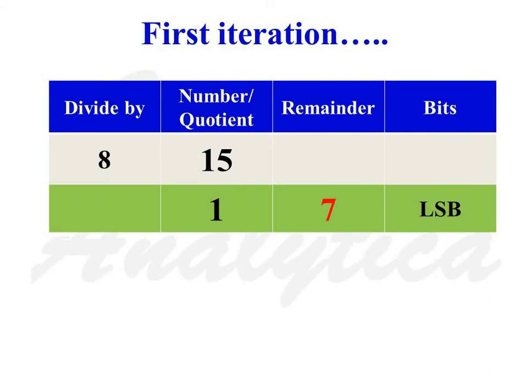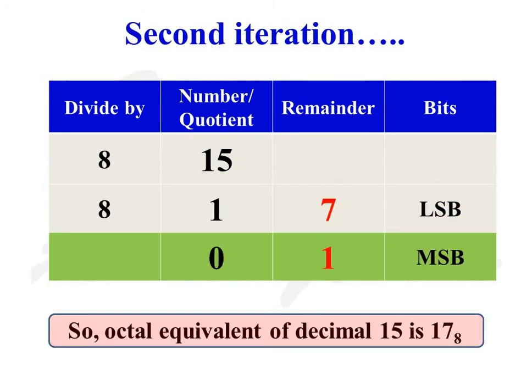As the quotient is not equal to 0, continue with the division for a second iteration. The quotient of the second operation is 0 and the remainder is 1. Since the quotient is equal to 0, the conversion process is complete. So the octal equivalent of decimal number 15 is 17.